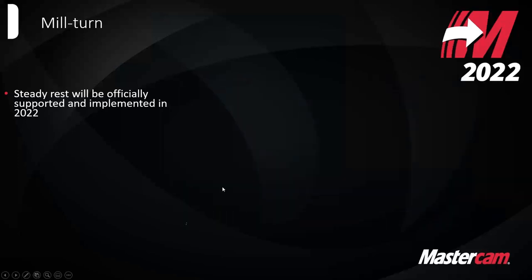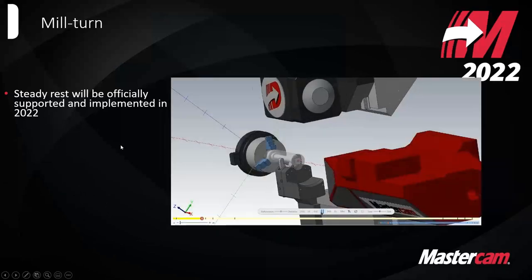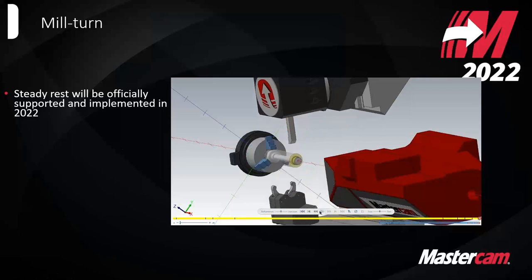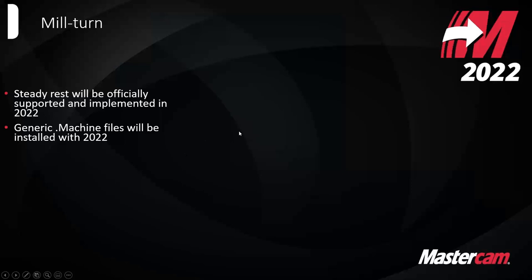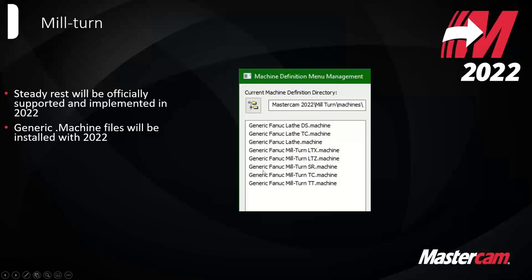On the MilTurn product, steady rest is officially supported in 2022. Before you would have to cheat MilTurn to get a steady rest to fully work — now it's just a separate programmable entity like it is on the machine. There are also generic machine files installed with 2022 for visual feedback and practice — lower turret, sub-spindle, different configurations, and twin-turret configurations. MilTurn will be available in the HLE in 2022, coming out a month or two after the main release. We still highly recommend reaching out to get a post specifically tailored to your machine for MilTurn.